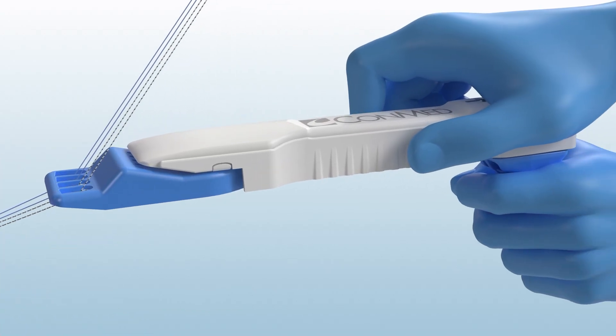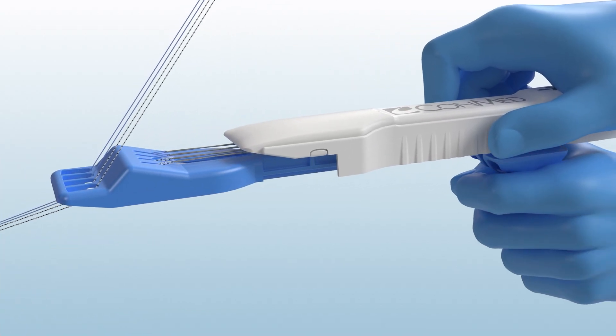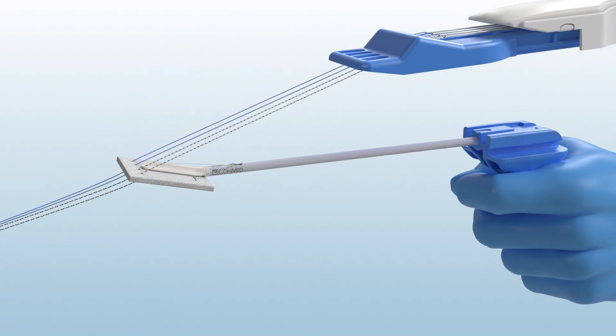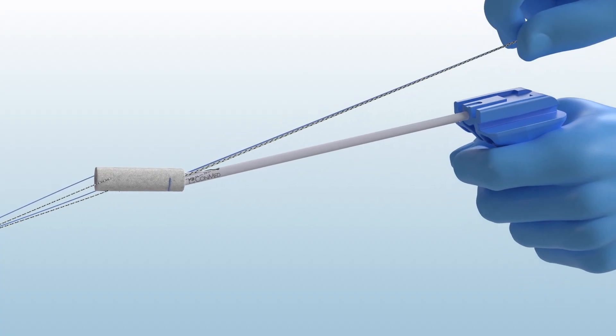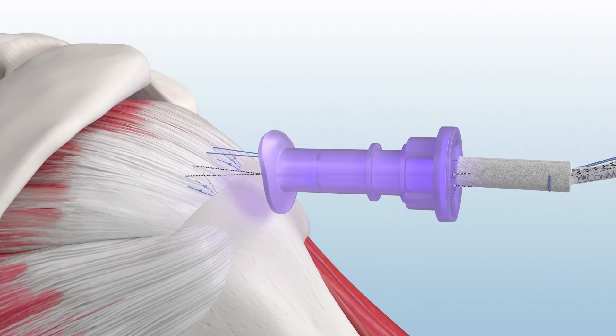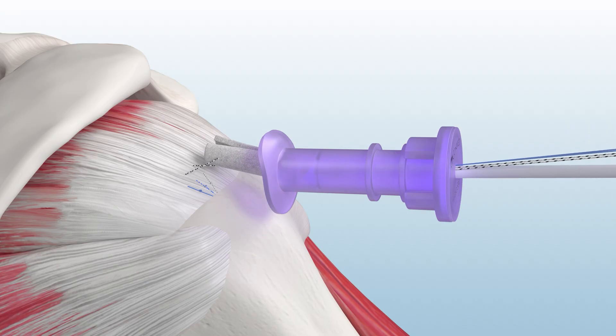To load the medial suture through the Biobrace implant, simply hold the blue handle and pull the suture loader in the direction of the arrow. Maintain tension on the medial suture while delivering Biobrace through the lateral cannula.